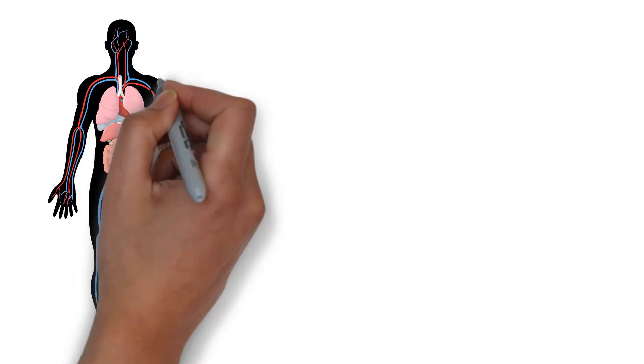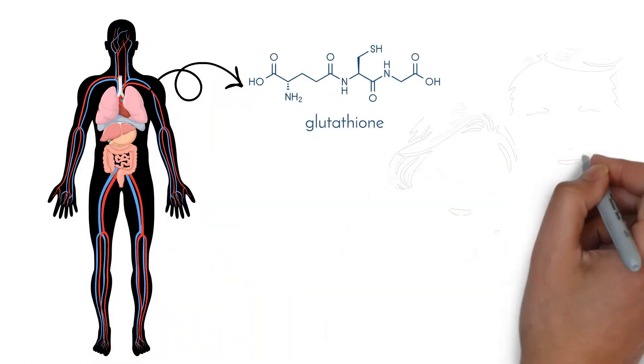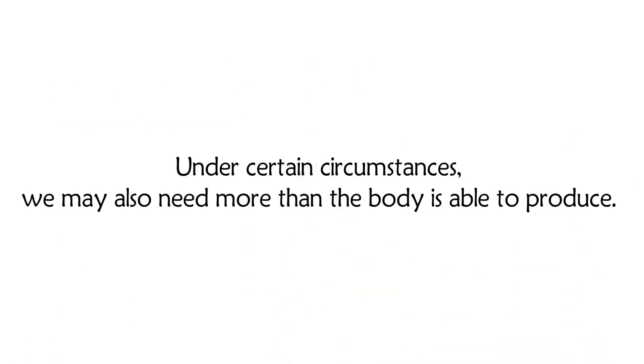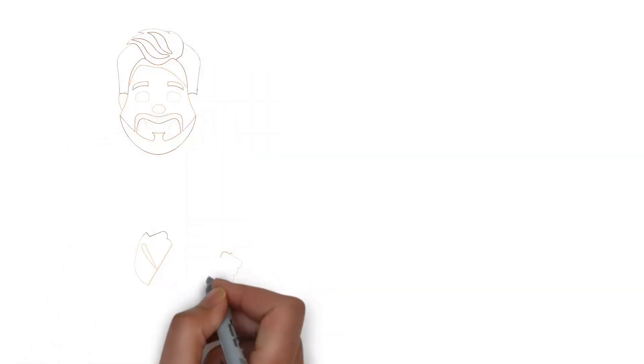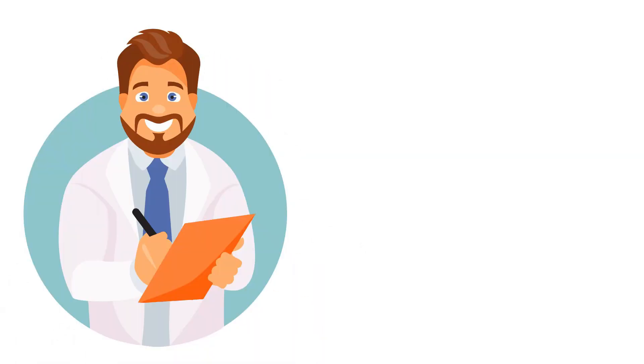Glutathione is a very effective antioxidant the body is producing, but we produce less as we get older. Under certain circumstances, we may also need more than the body is able to produce. In the following study, the researchers investigated